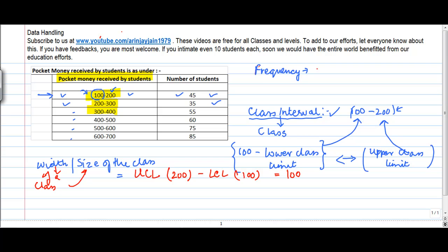And the frequency, the frequency I had discussed this initially also, is the number of times, number of students in this particular example, the number of times or items which fall in a given class. So you say that the frequency of class 100 to 200 is equal to 45, frequency of class 400 to 500 is equal to 60 and so on.